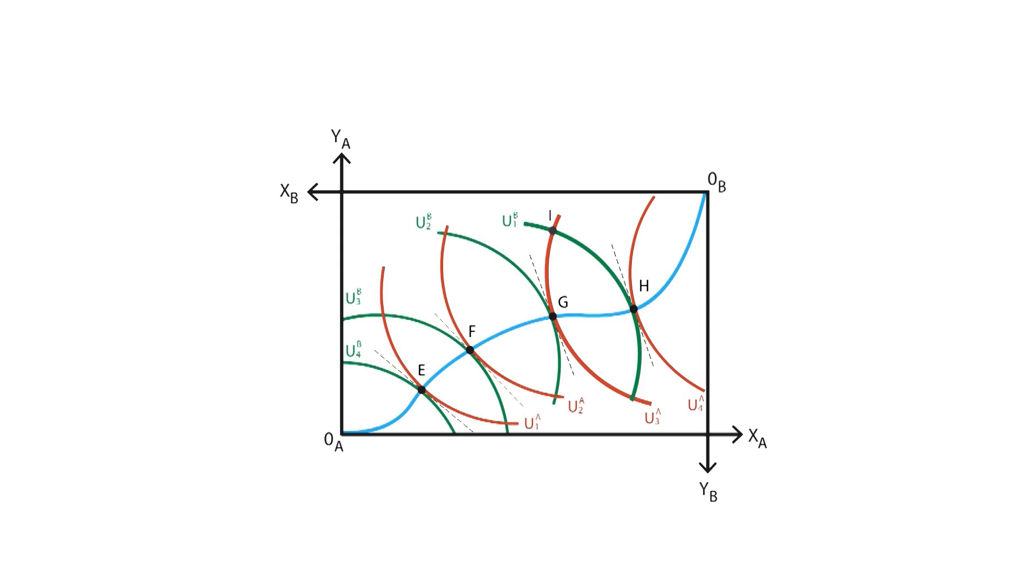However, consumer B would like to change to point G, since it would increase his utility, going from his first to his second indifference curve. Consumer A would not argue the change since his utility level is the same. This is what we call a Pareto improvement, since Pareto efficiency is reached. Notice that at point G, the marginal rates of substitution are equal to each other.